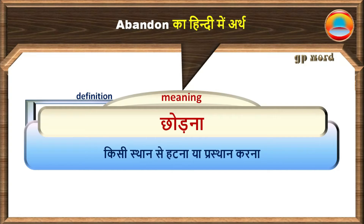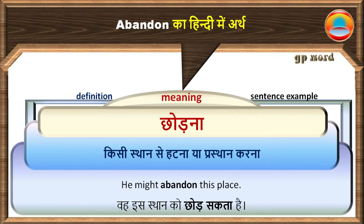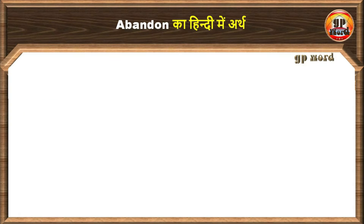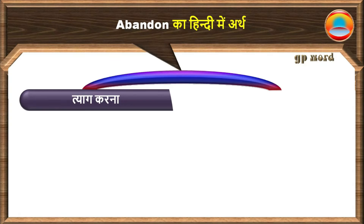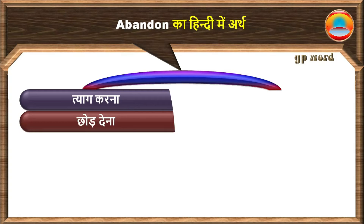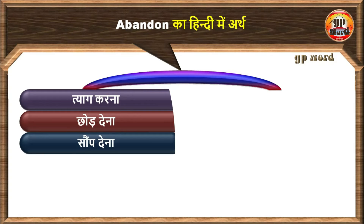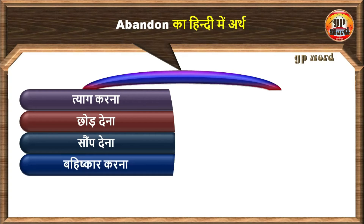Let's know with a sentence example. He might abandon this place. वह इस स्थान को छोड़ सकता है। Next meanings: त्याग करना, छोड़ देना, सौंप देना, बहिष्कार करना।